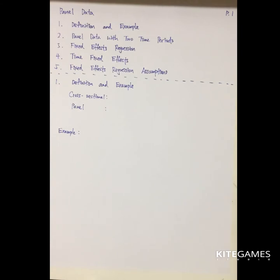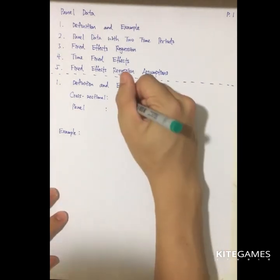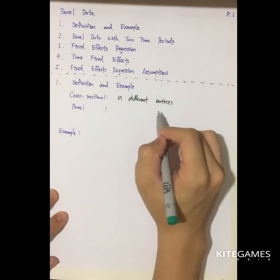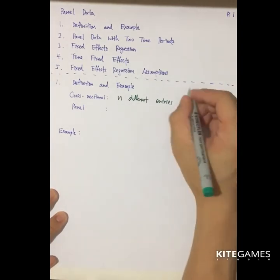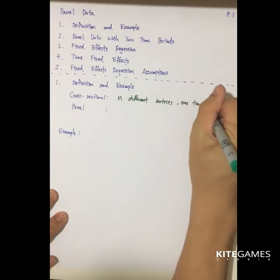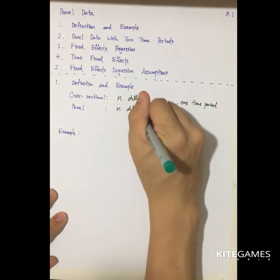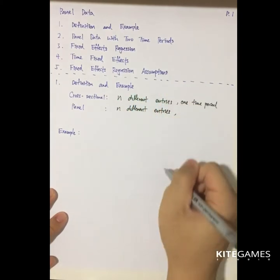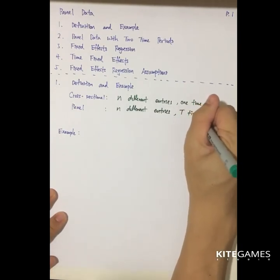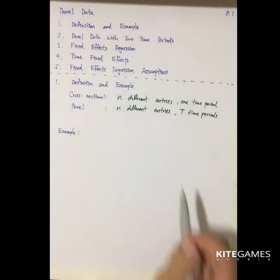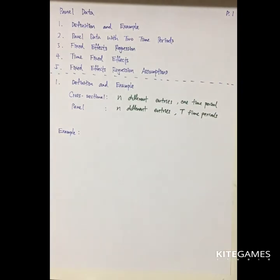First, the definitions. In videos 1 to 12, we mainly focused on cross-sectional data, which means there are N different people, countries, or firms with one time period. For panel data, we focus on N different entities — N countries, N firms, or N people — but we look at T time periods, where T is greater than 1. That means we are looking at N different people at many time periods.